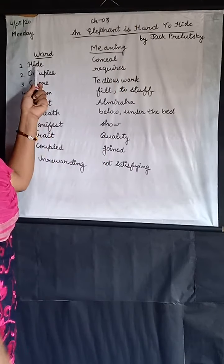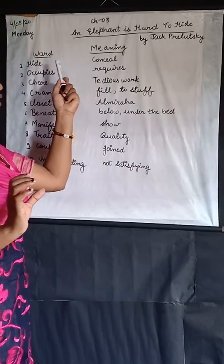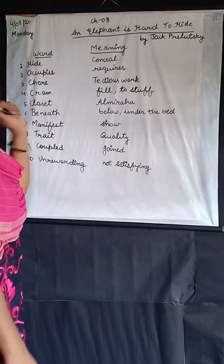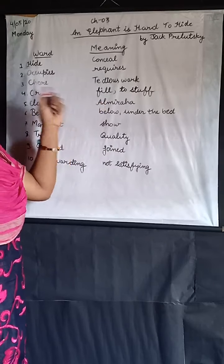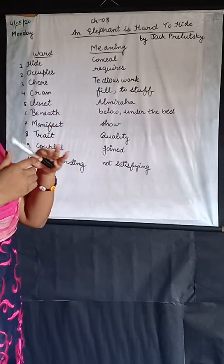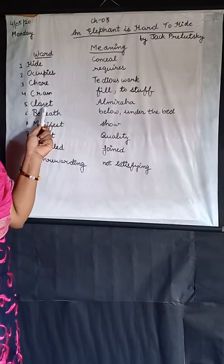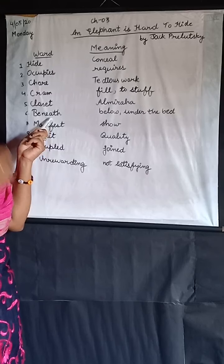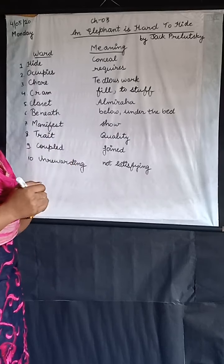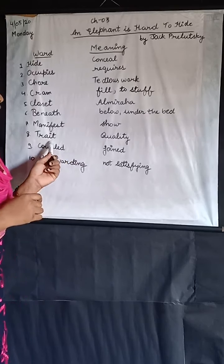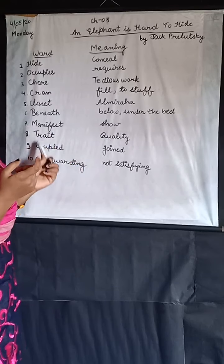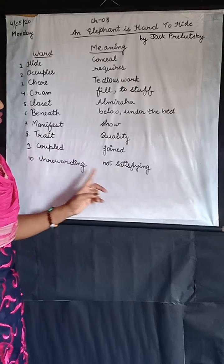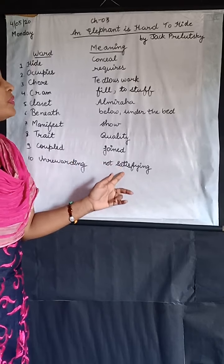The first word is hide — H-I-D-E — hide means conceal, chhupana. Second is occupies, which means requires, jagah gherna. Third is chore, which means tedious work. Fourth is cram, which means fill, kisi cheez mein kisi cheez ko fill karna, bherna. Fifth is closet, which means almirah. Sixth is beneath, which means below and under. Seventh is manifest, which means show or apparent. Eighth is trait, which means quality or specialty. Ninth is coupled, which means joined. And tenth is unrewarding, which means not satisfying.